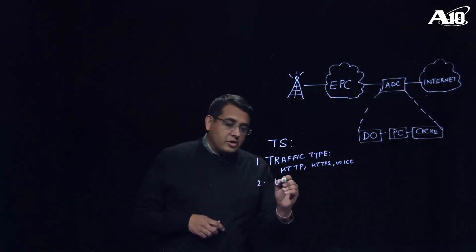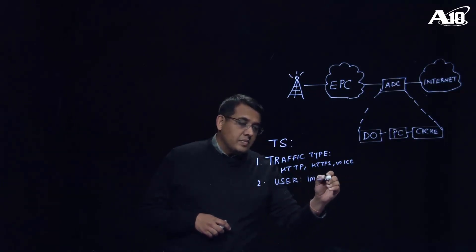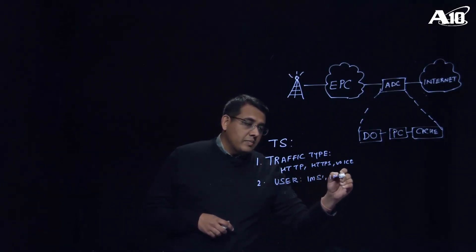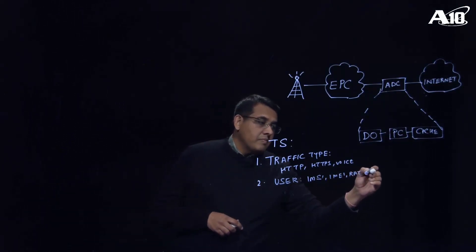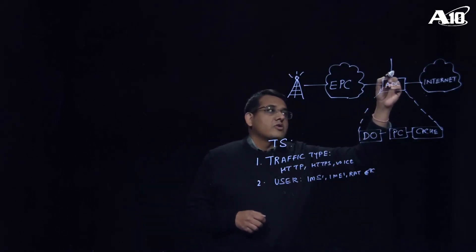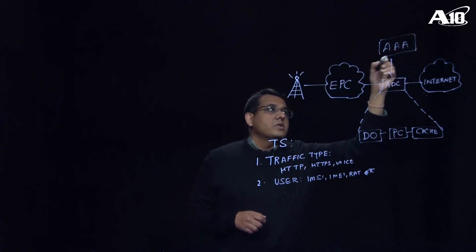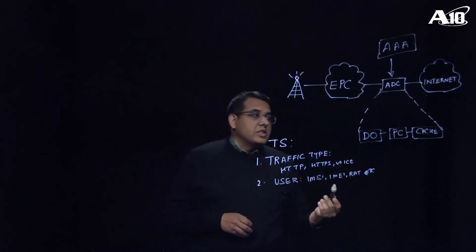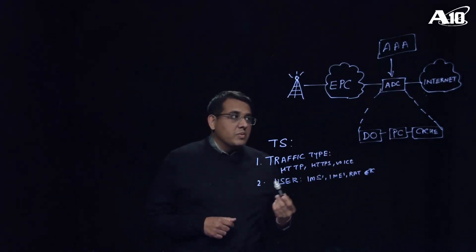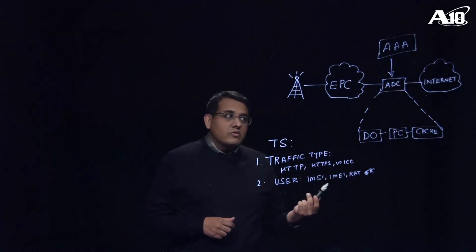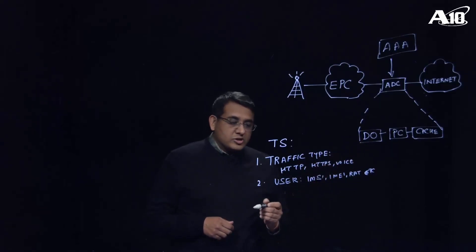Secondly, we can look at user attributes such as MSISDN, IMEI, RAT type, etc. These attributes we can get from a AAA server. For example, if the user is connecting to a radio access type like 3G, we can determine that it should undergo a data optimization service. But if it is connecting to a different radio access technology type, then we can determine that it's probably not worth sending it to a data optimization service.